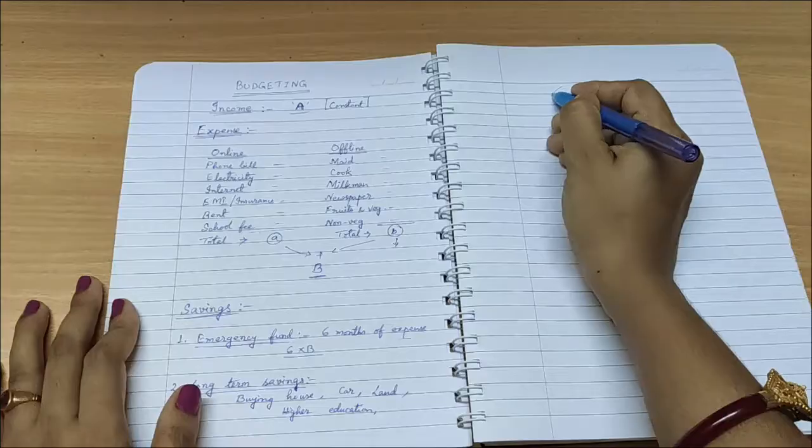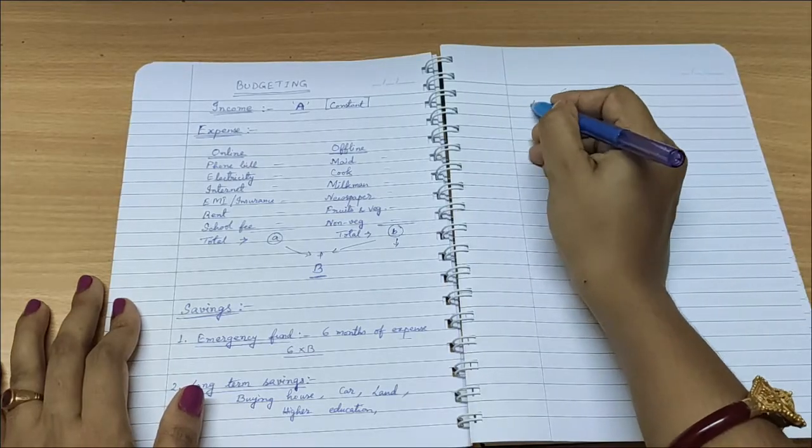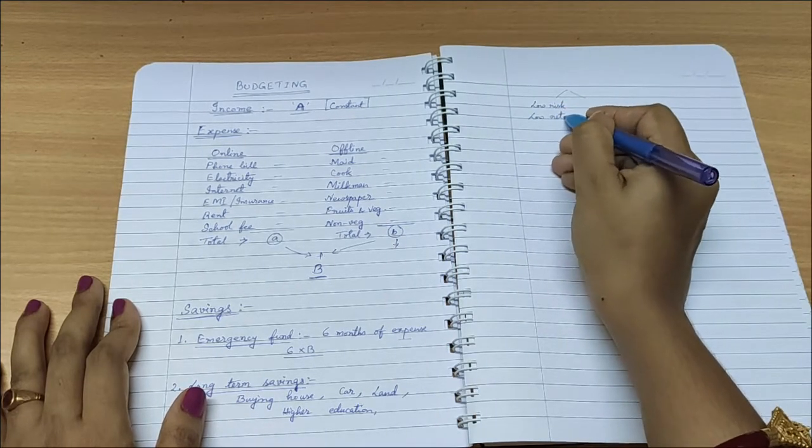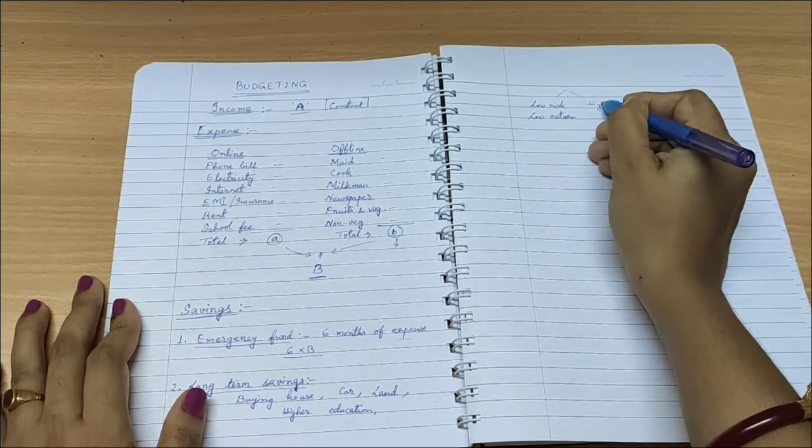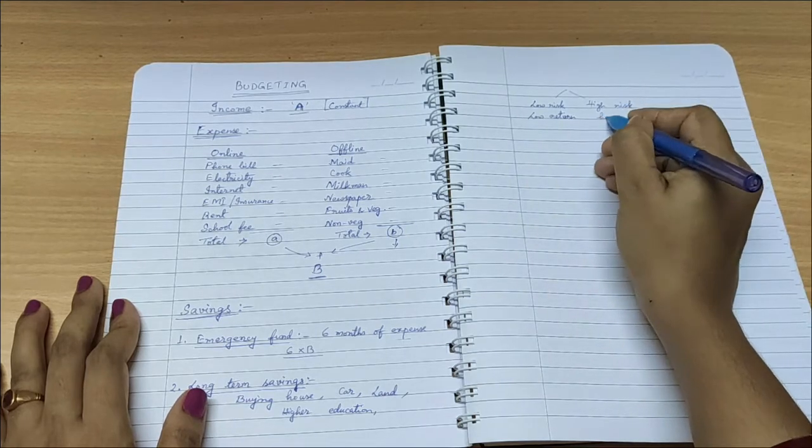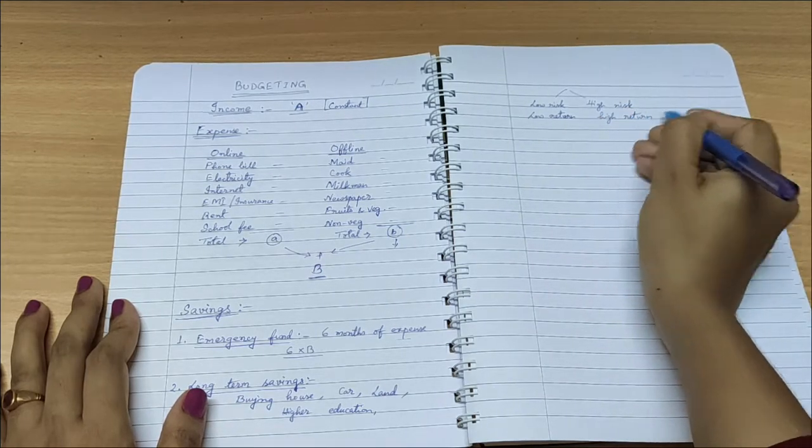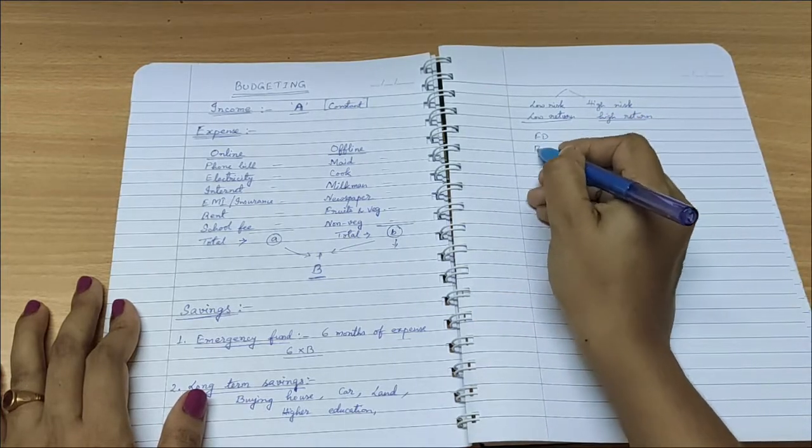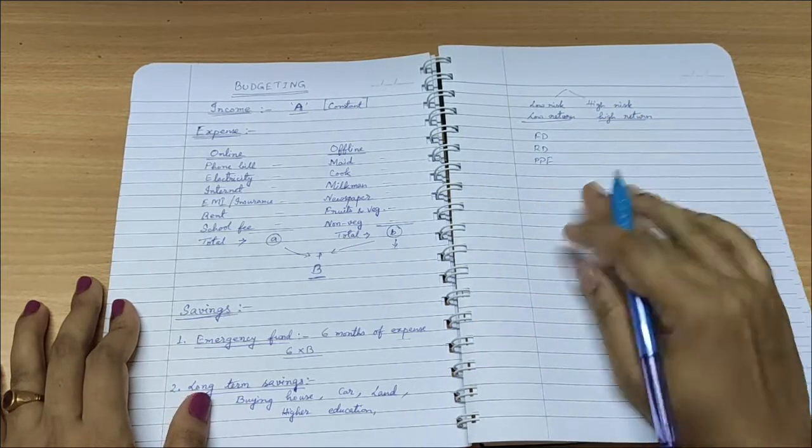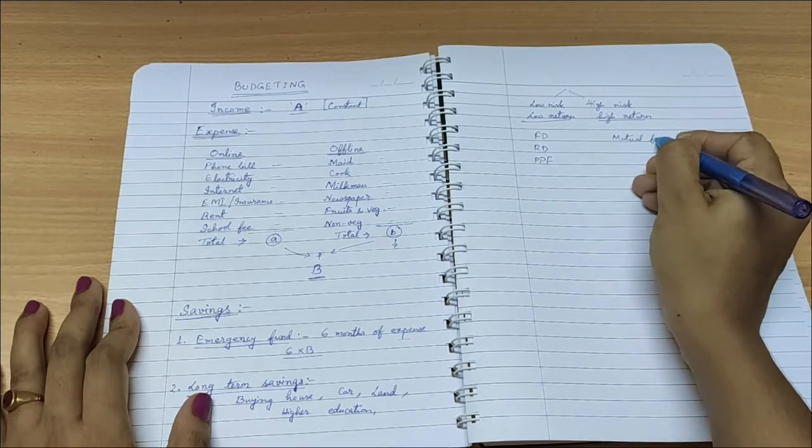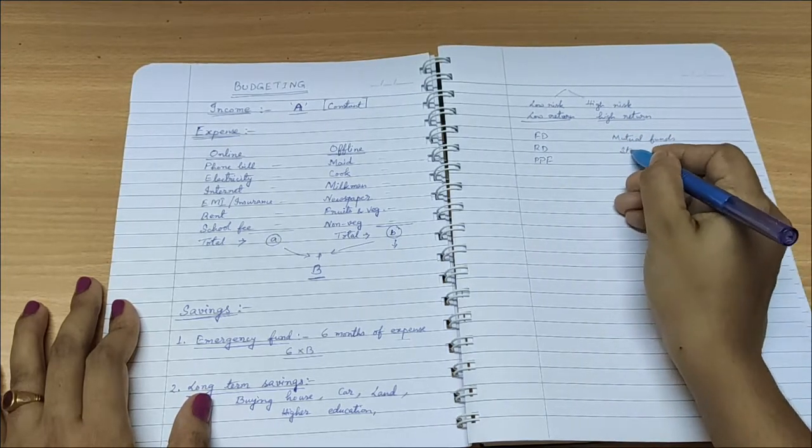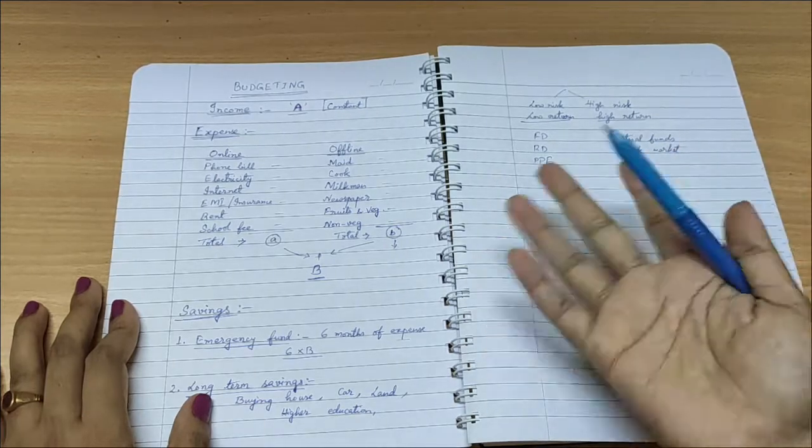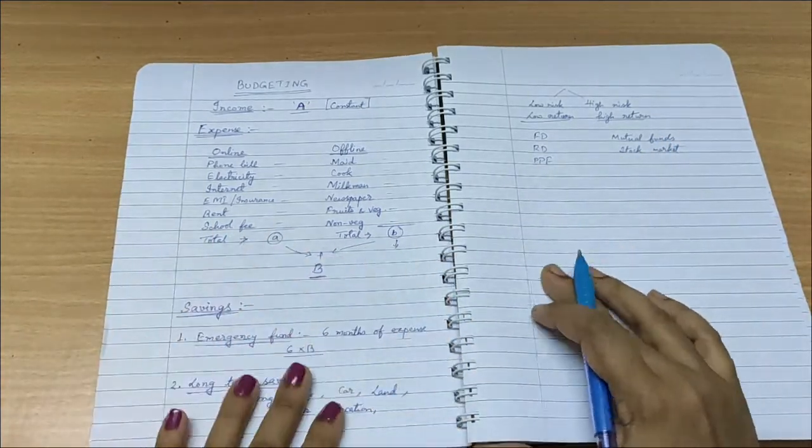As this is the major savings fund, it is better to put it into different places. There are two types of investment: one is low risk, low return, and the other is high risk, high return. So there are fixed deposit, recurring deposit, PPF in low risk category, and there are mutual fund, stock market in high risk category. So make sure you contribute a fixed amount to this fund every month also.